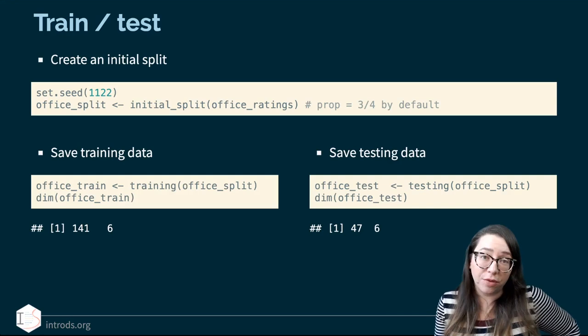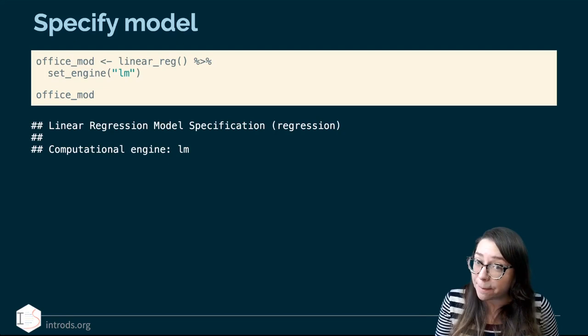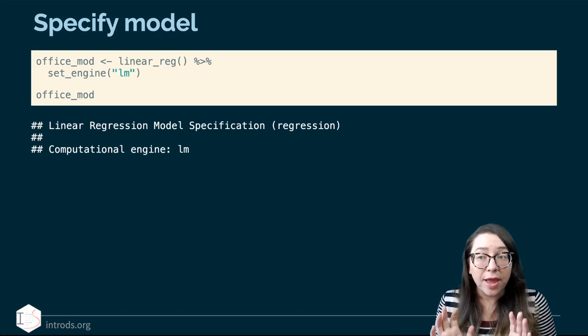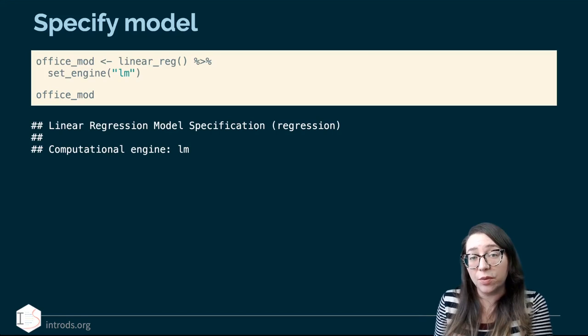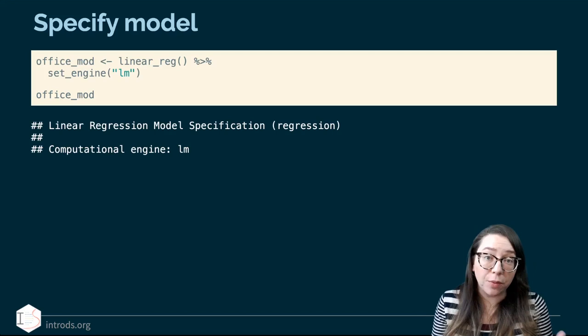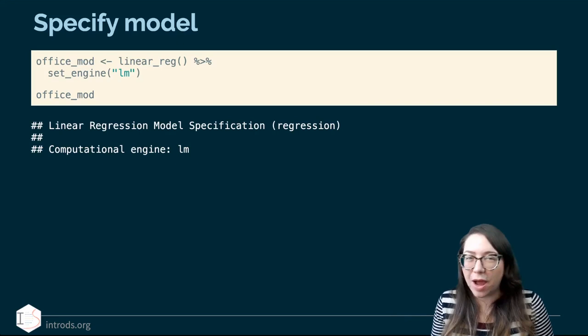We start by specifying a model. My outcome variable is continuous — that's the IMDB score — so I'm going to use linear regression. So far we've really only talked about linear regression and logistic regression. The decision in the context of this course is simple: if we have a continuous outcome, we use linear regression; if we have a binary outcome, we use logistic regression. Are there other models we could conceivably use? Absolutely — and before we wrap up the course we will mention them, but we won't go into details. For now, our decision process is simpler.